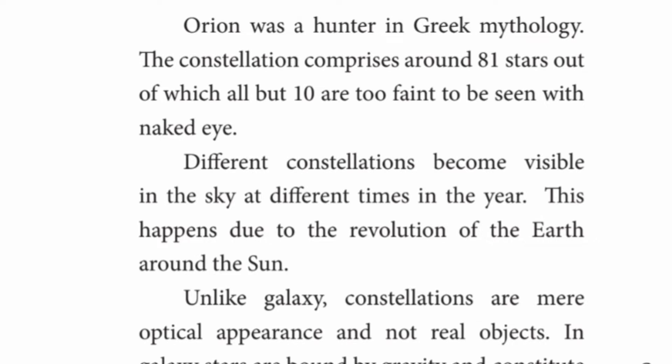Orion was a hunter in Greek mythology. The constellation comprises around 81 stars, out of which all but ten are too faint to be seen with the naked eye.